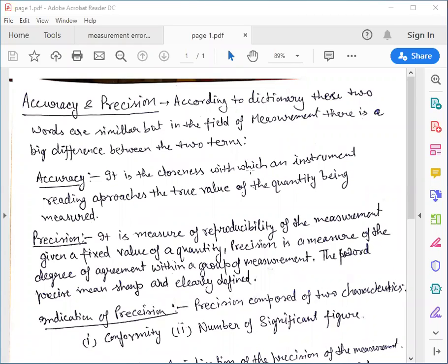Now, we will discuss the various characteristics which we have discussed earlier in the measurement system. These characteristics are accuracy, precision, drift, and resolution, and these were the static characteristics.